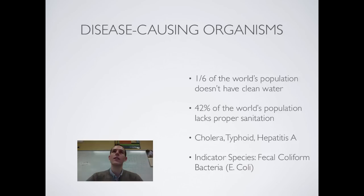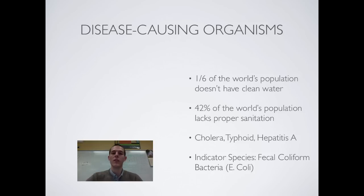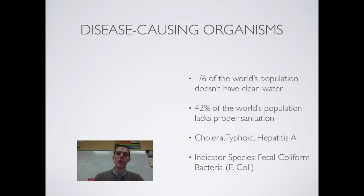If a scientist finds fecal coliform bacteria, they can infer that the water has probably been contaminated by human or animal waste and is likely to have some sort of pathogen in it. The fecal coliform itself is harmless, but it indicates that other more harmful pathogens could be present. One specific type of fecal coliform bacteria that scientists look at is E. coli, which lives in our guts. Most strains of E. coli are relatively harmless, so scientists can look for it as an indicator that other pathogens may be present.